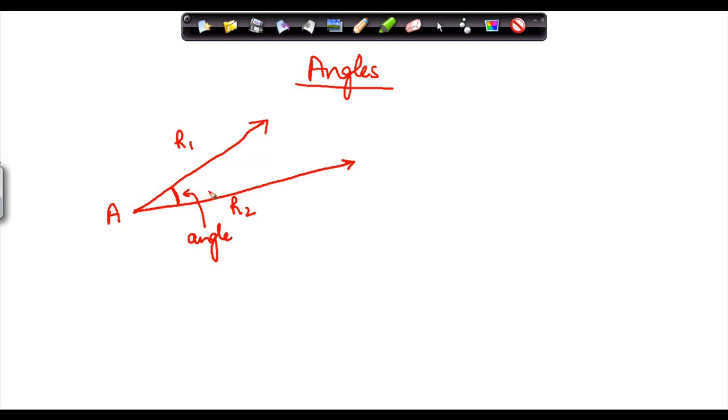These two rays basically are called the arms or sides of the angle. So basically R1 and R2 are sides of the angle. Now this angle can be called by any name. It can be called normally in common parlance what you call is that there is an angle at A.